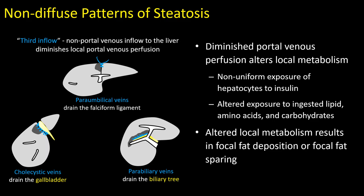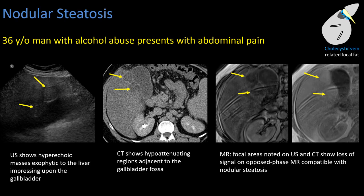Here we have a 36-year-old man with alcohol abuse and abdominal pain presenting on ultrasound with two heterogeneous, well-defined masses along the gallbladder fossa — very worrisome for neoplasm. The patient underwent CT and we see two well-defined masses with some local mass effect on the gallbladder that are low in attenuation.